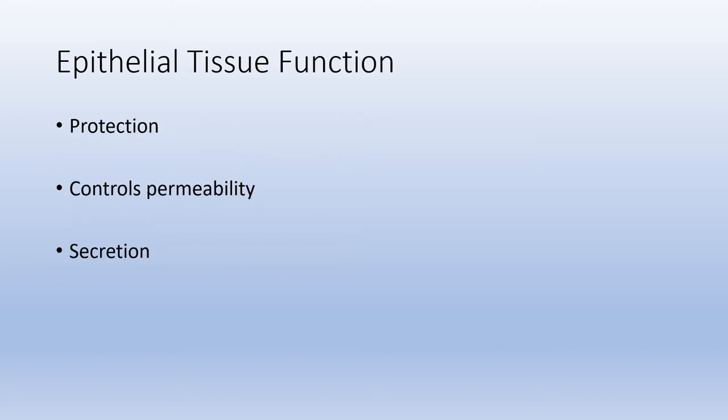The general functions of epithelial tissue include protection, since it lines so many cavities and exposed surfaces. Anything entering the body must pass through the epithelial tissue first. It also controls permeability — what can move in and out — and it performs secretion, often secreting substances like mucus or chemicals involved with breaking down other materials.